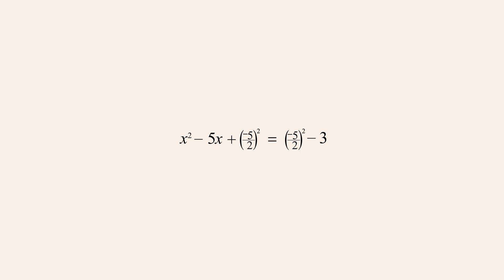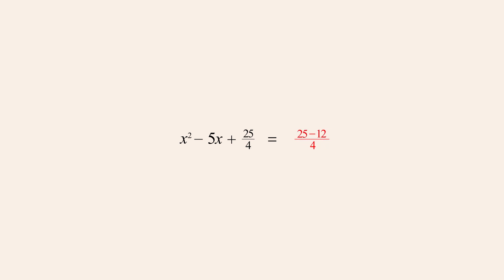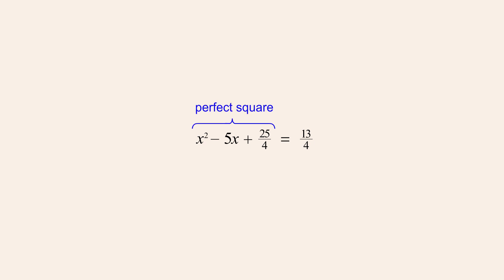Squaring the numerator and denominator gives us twenty-five-fourths. On the right side, we can simplify twenty-five-fourths minus three by converting three to twelve-fourths, and then subtracting twelve-fourths from twenty-five-fourths to get thirteen-fourths. The quadratic expression on the left is now a perfect square that can be written as x plus b over two-quantity-squared. And since in this example b is negative five, this perfect square quadratic can be written as x minus five-halves quantity-squared.